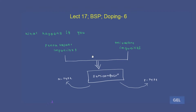Hi, welcome to lecture number 17 of EDC. We are still in the first module of basic semiconductor physics. This is the sixth lecture of the doping chapter. This is a very small lecture video that I've designed for you — let's complete it quickly.